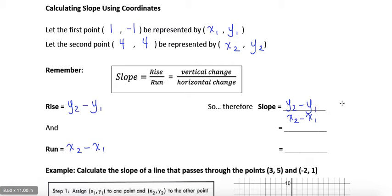You may also see this written as delta y over delta x, where delta is a Greek letter, and that just refers to the difference. So y2 minus y1 over x2 minus x1 is the same as delta y over delta x.